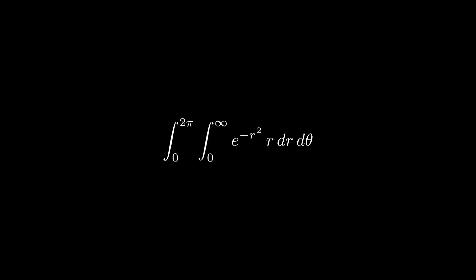Alright, so now let's think through how we attack this integral. First of all, notice that we can flip the two integral signs, no problem. Now notice that the integrand does not depend on theta, it's constant with respect to theta, so we can just pull out the 2 pi. So now we only have an integral with respect to r.